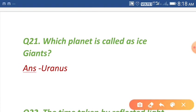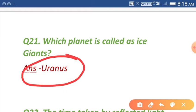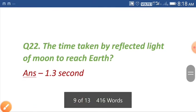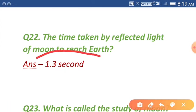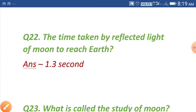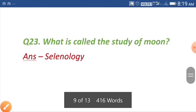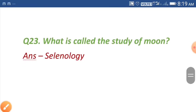Question number twenty-one: which planet is called the ice giant? Uranus is called the ice giant. Question number twenty-two: the time taken by reflected light of the moon to reach earth — the answer is 1.3 seconds.